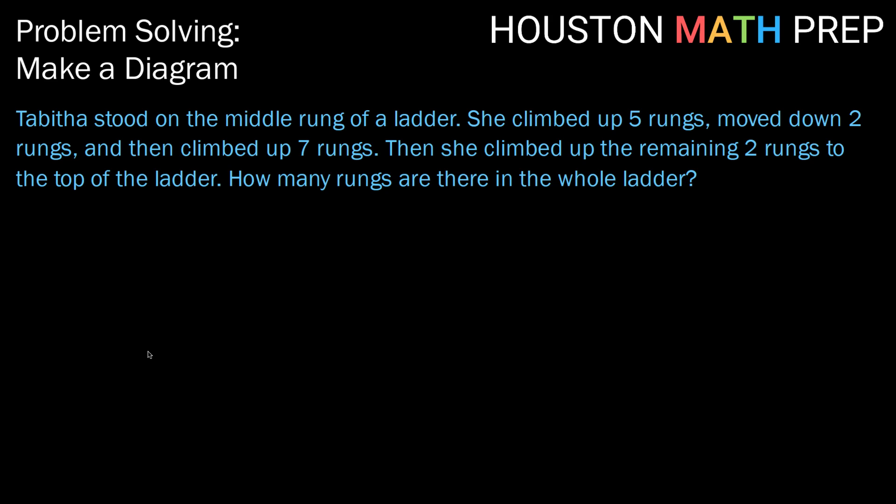So here's our problem. Tabitha stood on the middle rung of a ladder. She climbed up five rungs, then moved down two rungs, and then climbed up seven rungs. Then she climbed up the remaining two rungs to the top of the ladder. How many rungs are in the whole ladder?